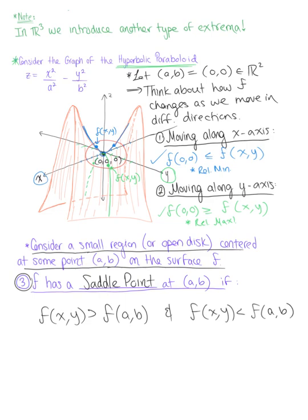So that is our third extrema here in three dimensions. We have local maxima, local minima, and saddle points.